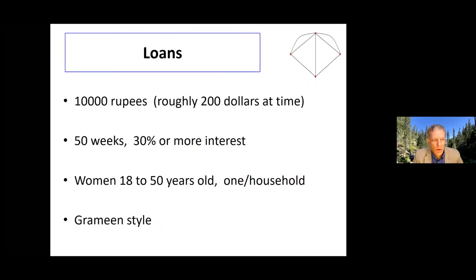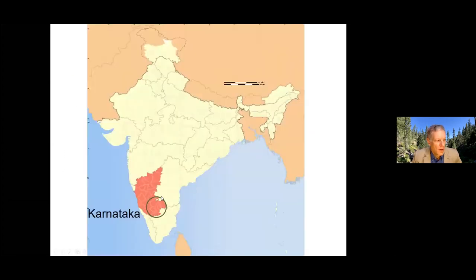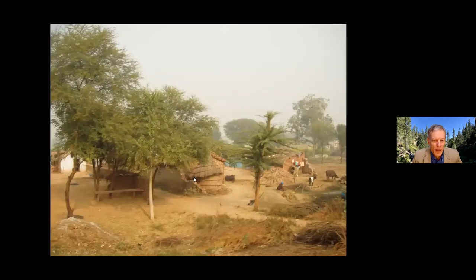They were offering loans — about 10,000 rupee loans, roughly $200 at the time, over 50 weeks, at high interest rates of about 30% or more. These loans were given to women, 18 to 50 years old. They were Grameen style — no collateral, but if you defaulted, you could not get a loan again. They were put into groups of five to give incentives: if anybody in your group defaulted, you were not allowed to get loans again. We were in a roughly 100 kilometer band around Bangalore, in Karnataka.